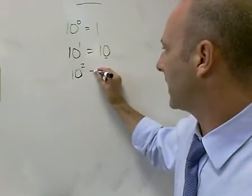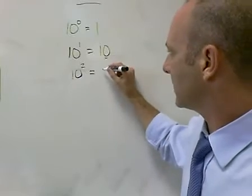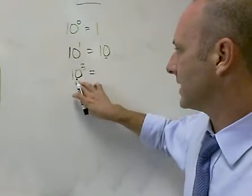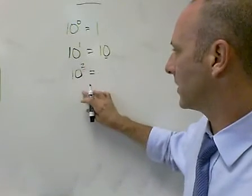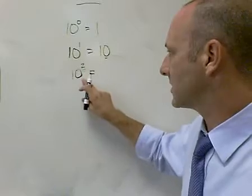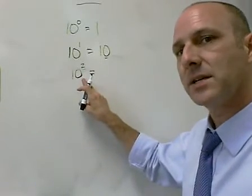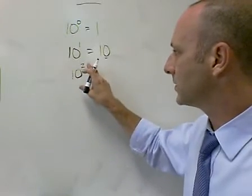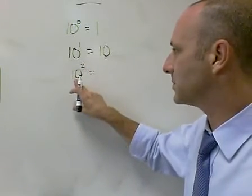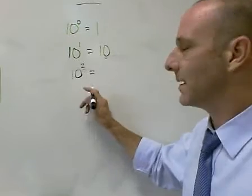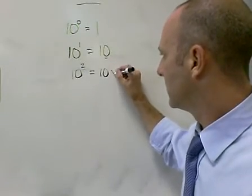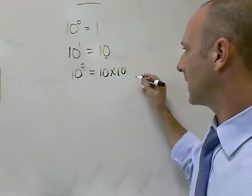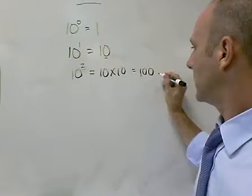When you go to the next one of the pattern, 10 to the 2nd — the 2 is the exponent. This is your base, and this is your exponent. The exponent tells how many times the base is multiplied by itself. So we're not multiplying the base by 2; the 2 is telling us we multiply this base by itself 2 times. So we're really saying 10 times 10, and 10 times 10 equals 100.